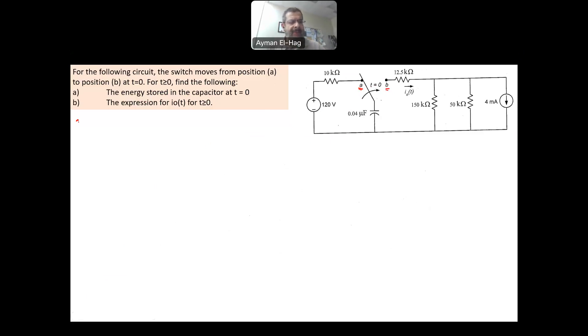We start from part A and need to draw the circuit at T equal to 0 minus. This is the moment before we move the switch. Here, this is 120 volt. We have 10 kilo ohm and here you have your capacitor as an open circuit because we assume that the switch at position A for long enough that this is fully charged.